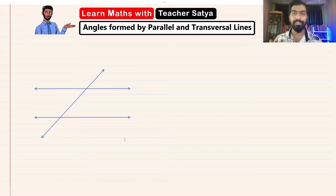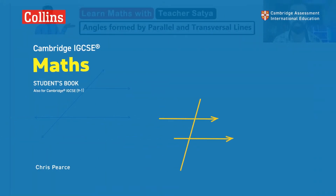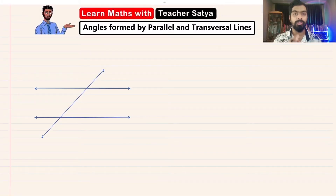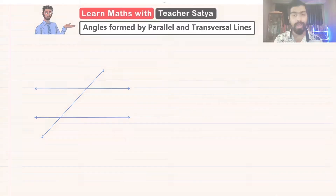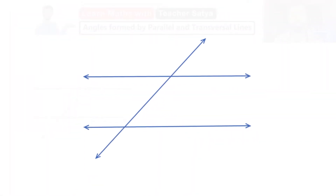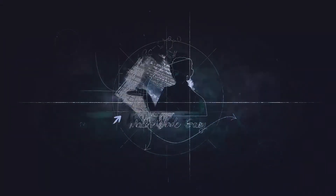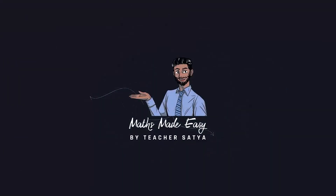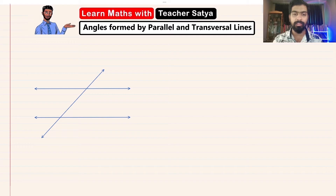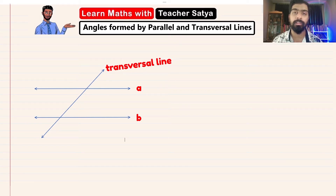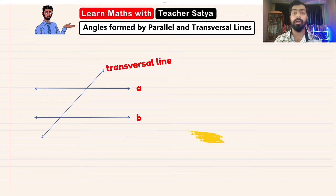Welcome back to another video in the series of IGCSE Maths Curriculum. In this video, I'll be teaching you about the angles that are formed when a transversal line intersects two parallel lines. Let me take this as parallel line A, this as parallel line B, and this as the transversal line. As you can see here, the total amount of angles that are formed are 8 angles.